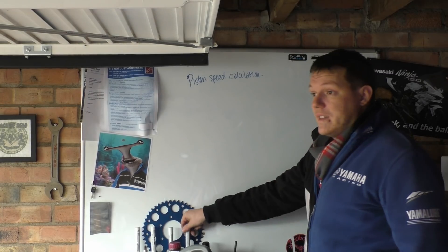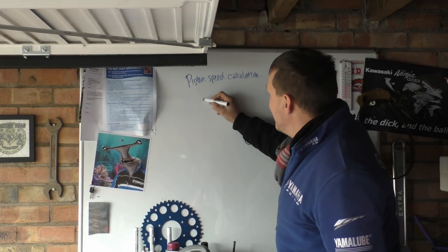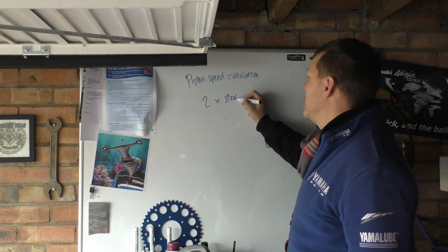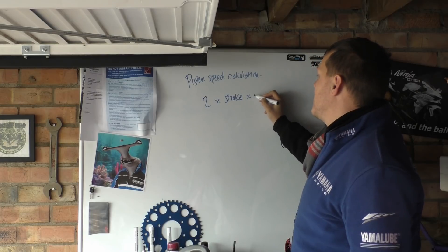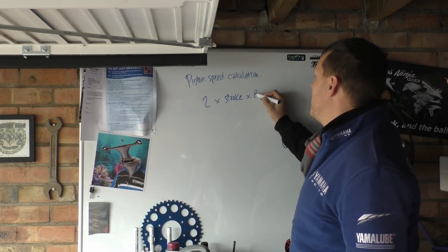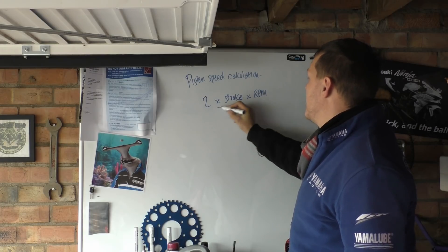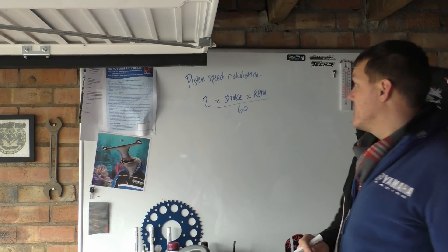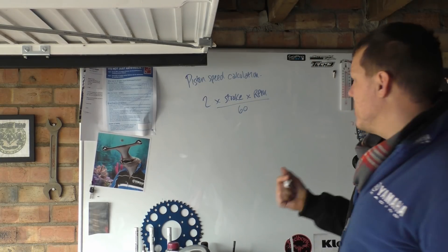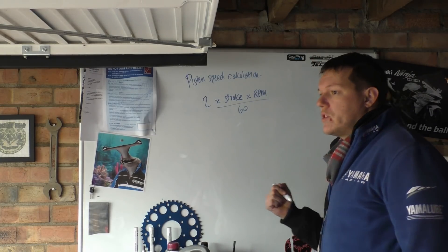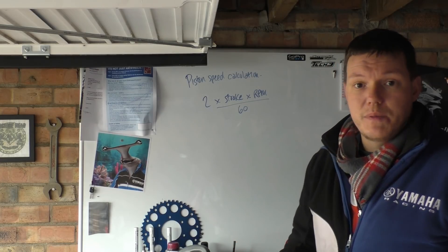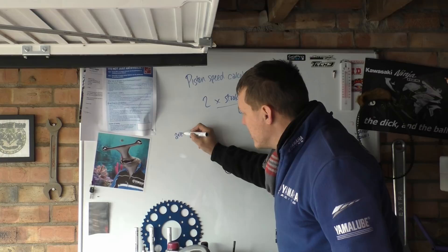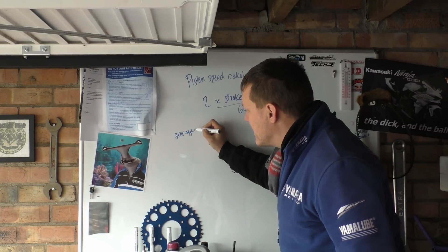So, two times our stroke, times our RPM, over 60. Why is it this way? So our stroke — we're trying to work out mean average piston speed. We're trying to work out the average, and this will become important in a minute.